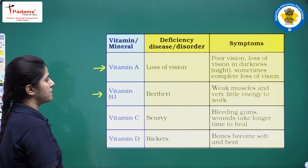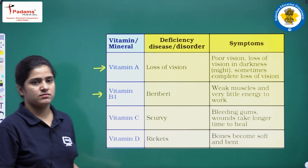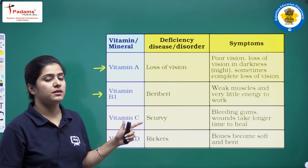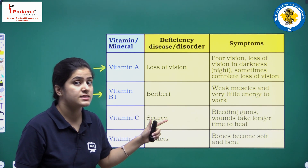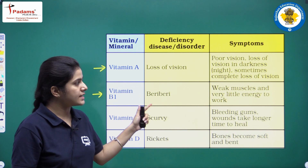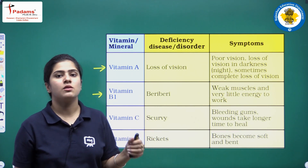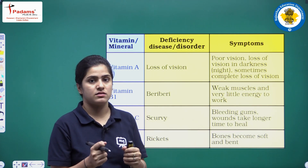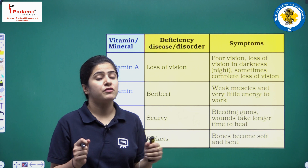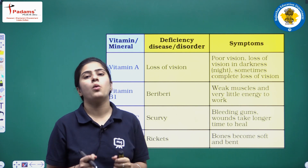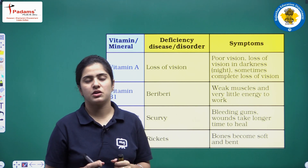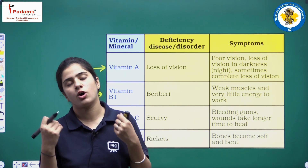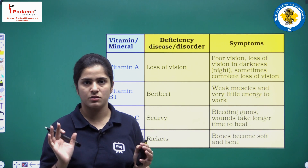Second, vitamin B1. Because of the deficiency of vitamin B1, beriberi disease will occur. Due to this disease your muscles will be very weak, you will feel very low in energy and will not be able to do any kind of work.